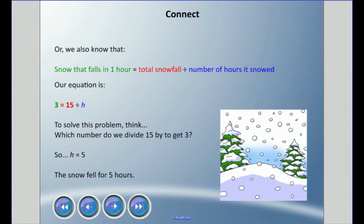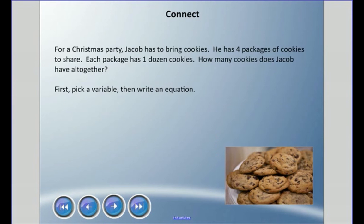And then lastly, an equation we can make is the snowfall that fell in one hour, which was 3 centimeters, will equal the total snowfall, which was 15 centimeters, divided by the number of hours it snowed. So 15 divided by H equals 3. It's the same thing as saying 15 divided by 3 equals 5, or 15 divided by 5 equals 3. It's very related. To solve this, I think what do I need to divide 15 by to get 3? H equals 5. So I know the snow fell for five hours.